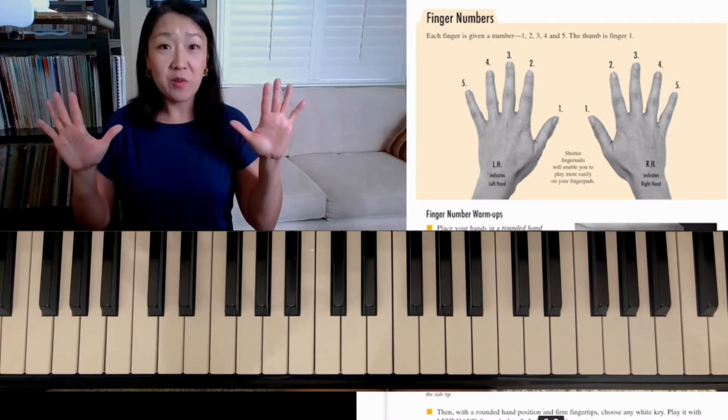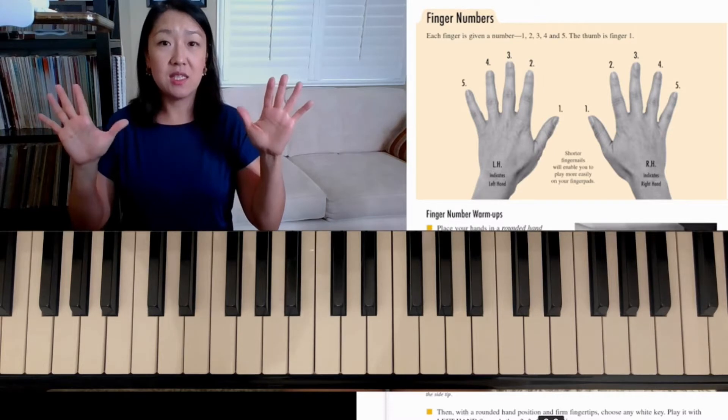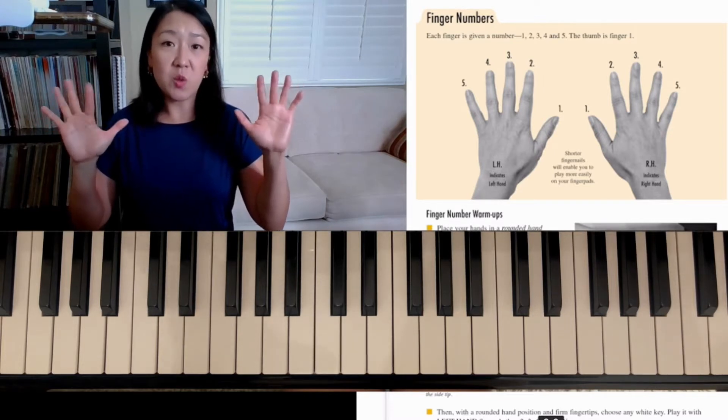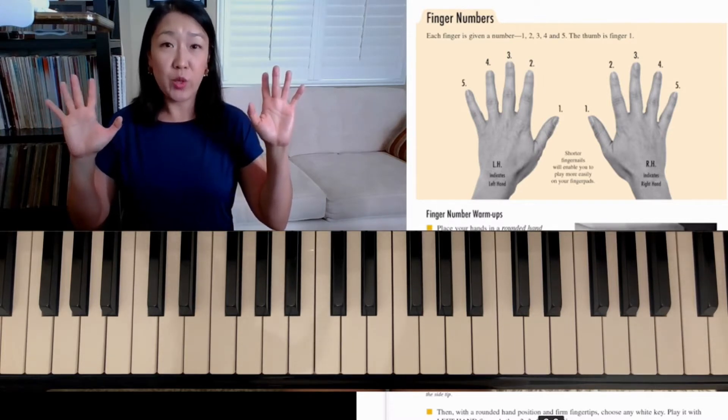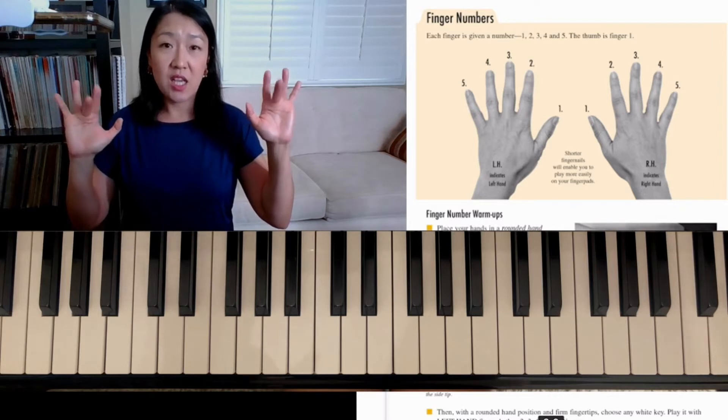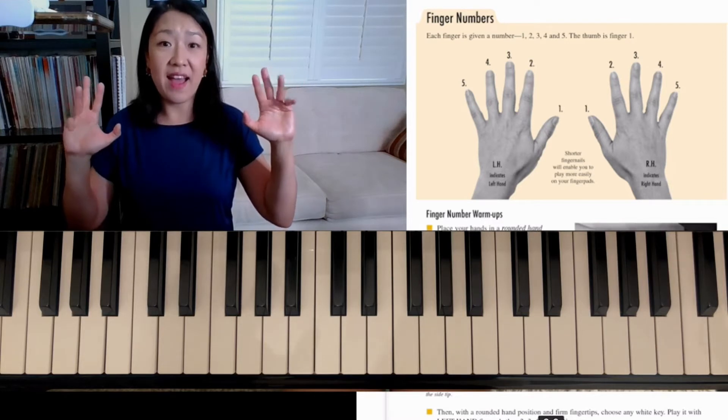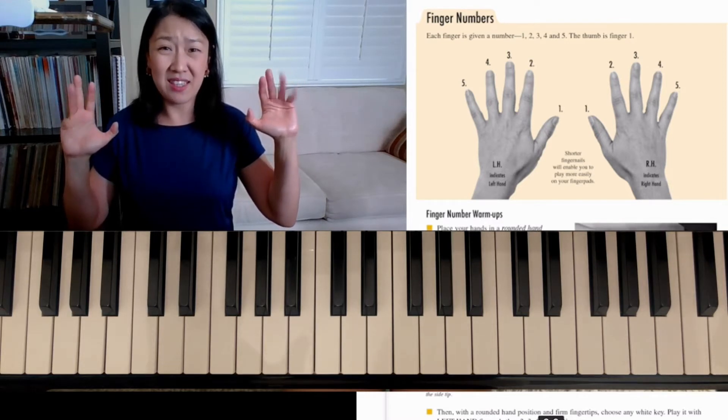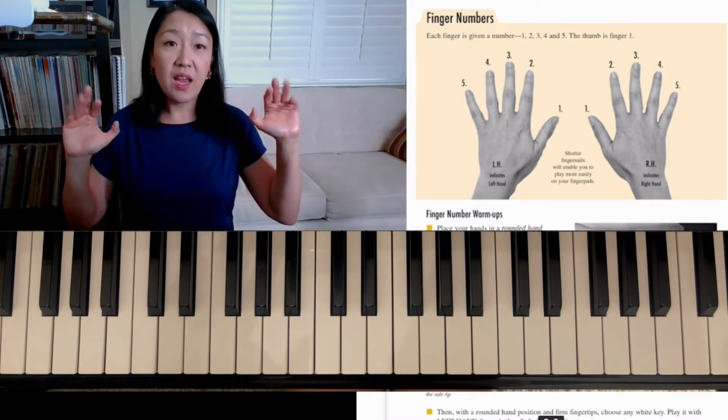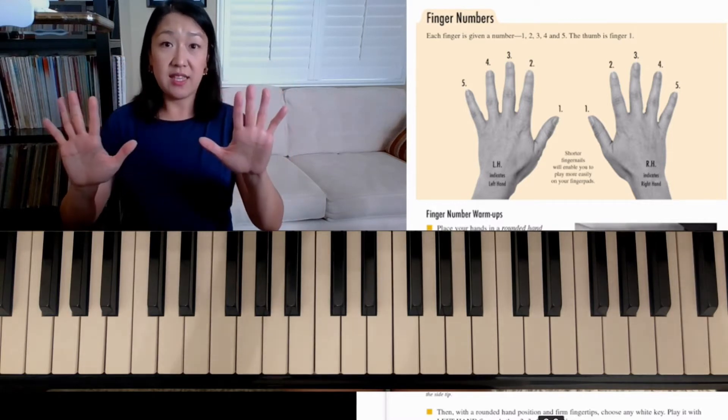Put your hands up and wiggle your number 1s. And 2s, 3s, 4s. 4 is a little harder. It's less independent. And then 5. I know 5 is like even more difficult, right? The 4 naturally kind of goes with it. And that's a little warm up.